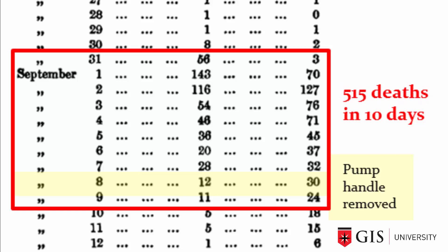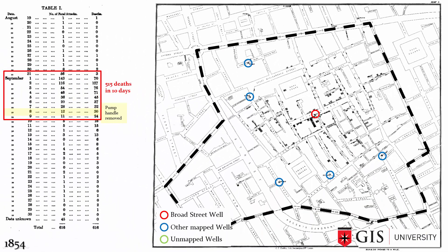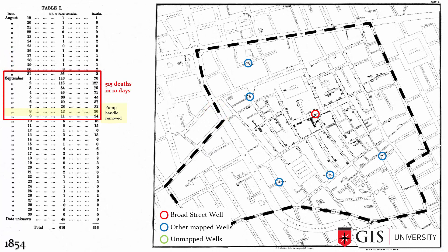John Snow believed that the Broad Street well was the most likely source of the cholera outbreak, but he needed to prove it. So he created a map showing where each of the 500 cholera victims were when they became symptomatic. He put a dashed line at the street address — that geocoding approach I mentioned. Importantly, he geocoded them at the address where they became symptomatic, not their home address, which is a key study design consideration.